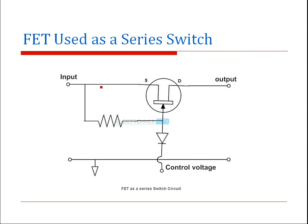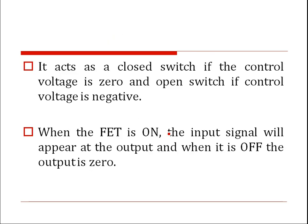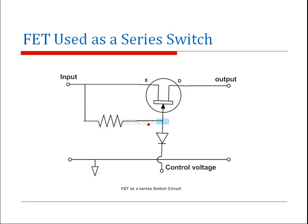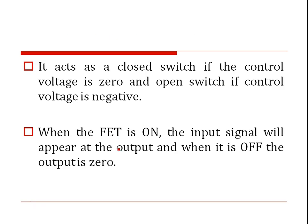When the FET is used as a series switch, it is connected in series between input and output, and the control voltage is applied at the gate. It acts as a closed switch when the control voltage is zero, and an open switch when the control voltage is negative and greater than the pinch-off voltage. When the FET is on, the input signal appears at the output; when it is off, the output is zero.